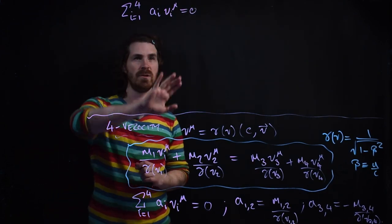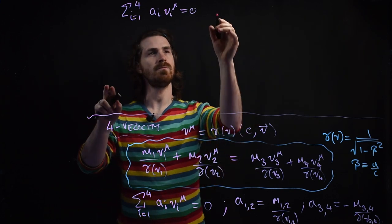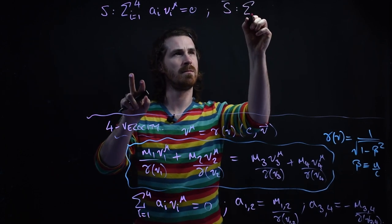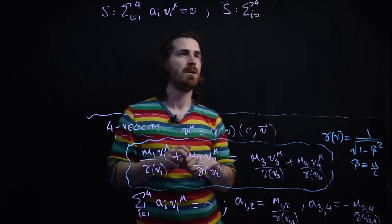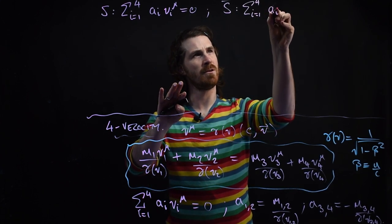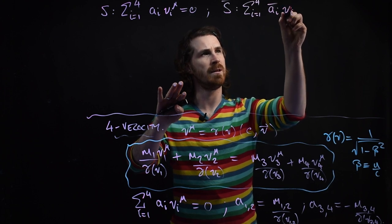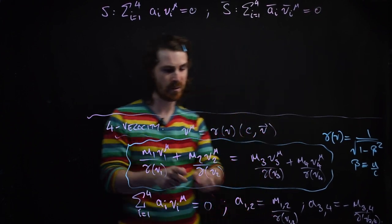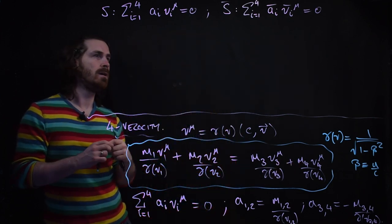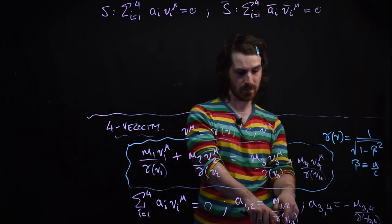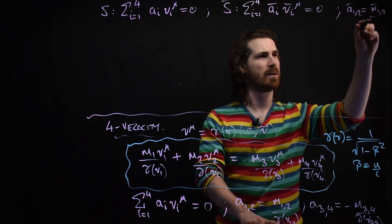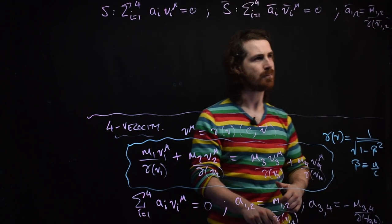In frame S-bar, a different frame, we have a similar sum from i=1 to 4 of a_i-bar times the 4-velocity in the barred system equals 0, because we didn't specify which frame we were in. Here a_1,2-bar is m_1,2-bar divided by gamma(v-bar_1,2), and particles 3 and 4 have a minus sign. In a different frame, the mass can change and the velocity we know is different.